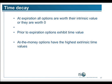Time decay: options decay at what's called the square root of time. What we really need to know is that shorter-dated options are going to decay more per day than longer-dated options, and all options at expiration are going to be worth zero for their extrinsic value. At-the-money options have the highest extrinsic time value. For example, if we're trading at $1.05, the $1.05 call might be trading at $1.50 — that's all extrinsic value with no intrinsic value. The $1.09 call might be trading at $0.30, and the $1.04 call might be trading at $1.90, which has more nominal value but less extrinsic value than the at-the-money call.